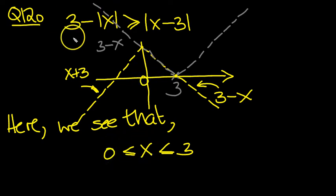So you could put 1 in, for example, here. You'd have 3 minus 1, which is 2. And you put 1 in here. 1 minus 3 is minus 2. Modulus minus 2 is 2. Is 2 bigger than or equal to 2? Yes, it is. So 1 is included. That's just by way of illustration of one particular value.